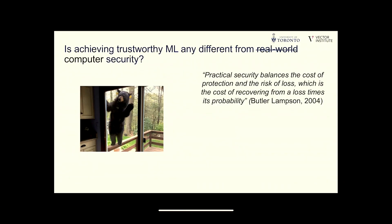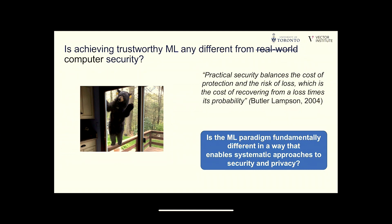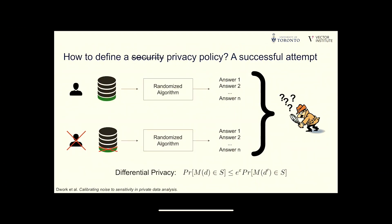Does this mean trustworthy machine learning is no different from traditional computer security, where we end up in an arms race balancing cost of protection against risk of loss? I would argue it's not the case — machine learning brings a sufficiently novel paradigm that allows us to reason in a principled way, because it makes it much easier to describe system behavior formally. To illustrate this, I'll walk through progress we've made in privacy-preserving machine learning, where we've made far more progress than in robust machine learning.